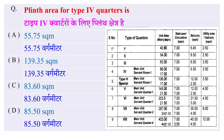Plinth area for Type 4 quarter is — Type 4 quarter के लिए plinth area कितना होता है? Options: 55.75 sq. meter, 149.35 sq. meter, 83.60 sq. meter, या 85.50 sq. meter. इसका जवाब है 83.6 sq. meter। यहाँ right side में जो latest chart दिया हुआ है उसके हिसाब से Type 4 quarter के main unit में 86 units और servants quarter के लिए 17 units दिए हुए हैं। इस chart को ध्यान रखें और बाकी units का area भी अपने दिमाग में बना कर रखें — यह आगे के exam के लिए उतना ही उपयोगी होगा।